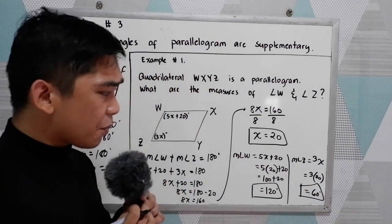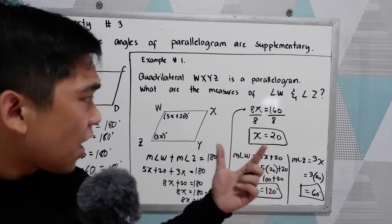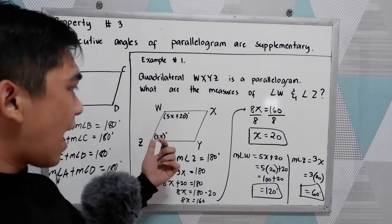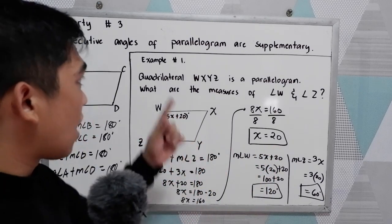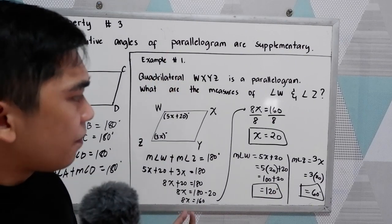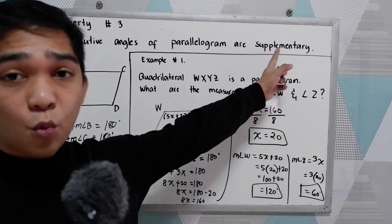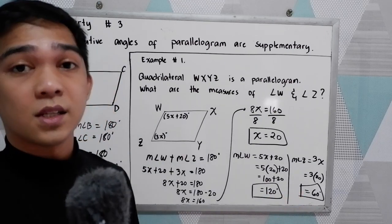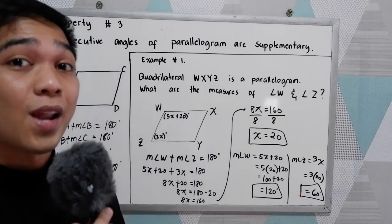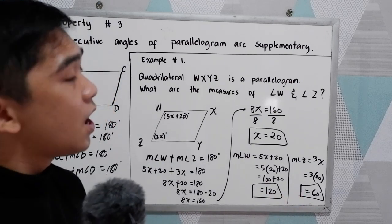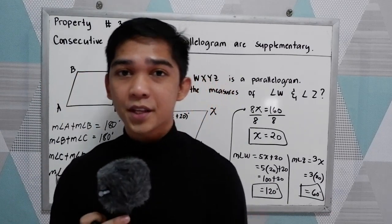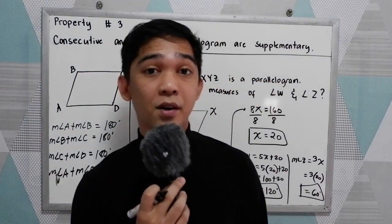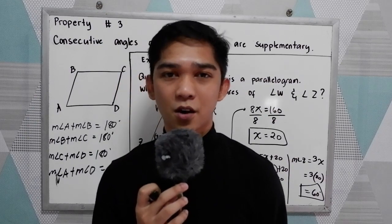To check using property number 3: since angle W and angle Z are consecutive angles in our parallelogram, their sum must equal 180 degrees. So 120 plus 60 equals 180 degrees. That confirms property number 3 — consecutive angles of a parallelogram are supplementary.